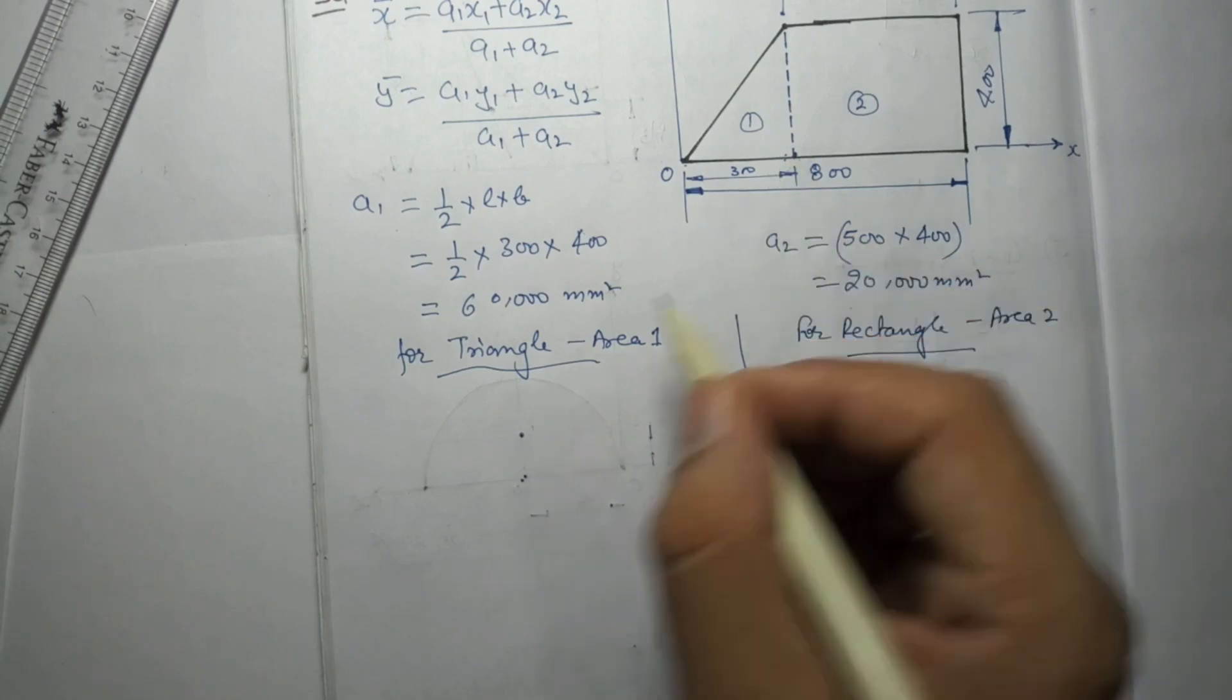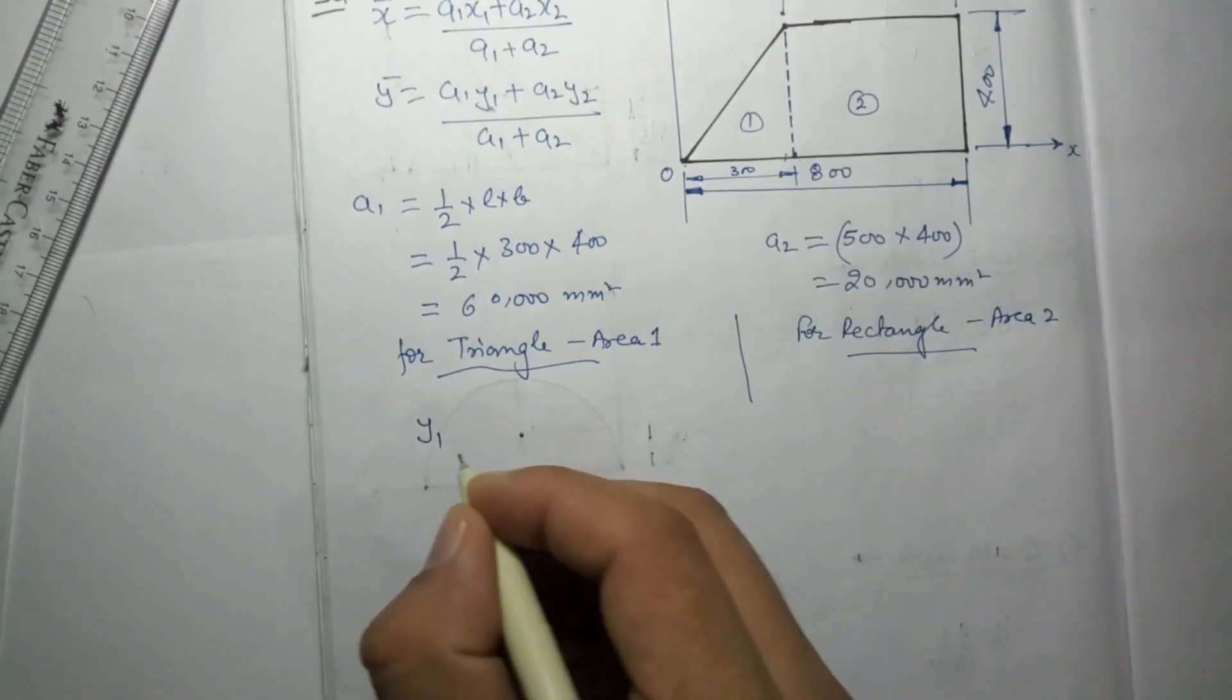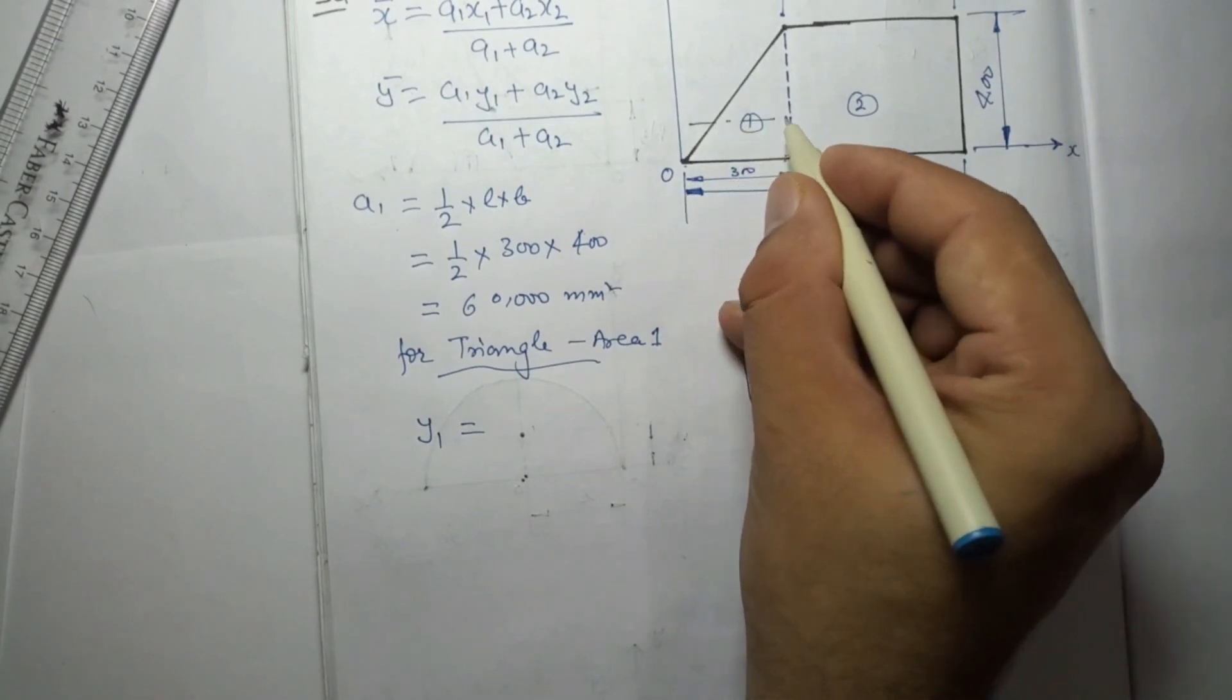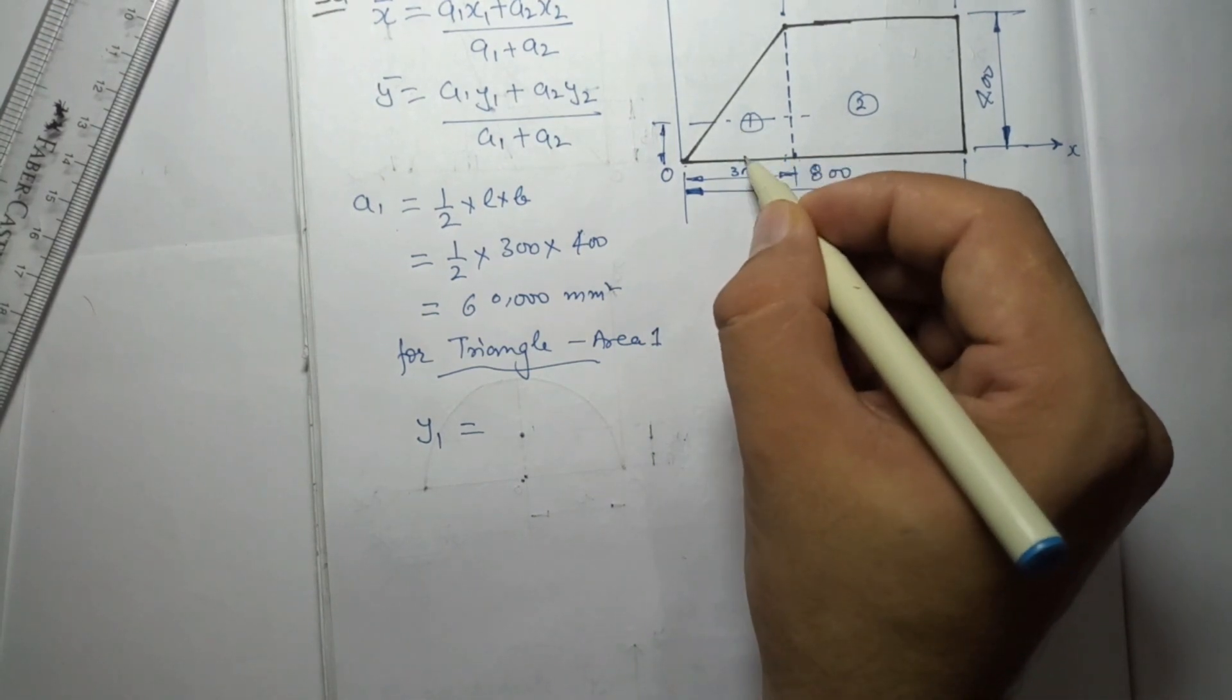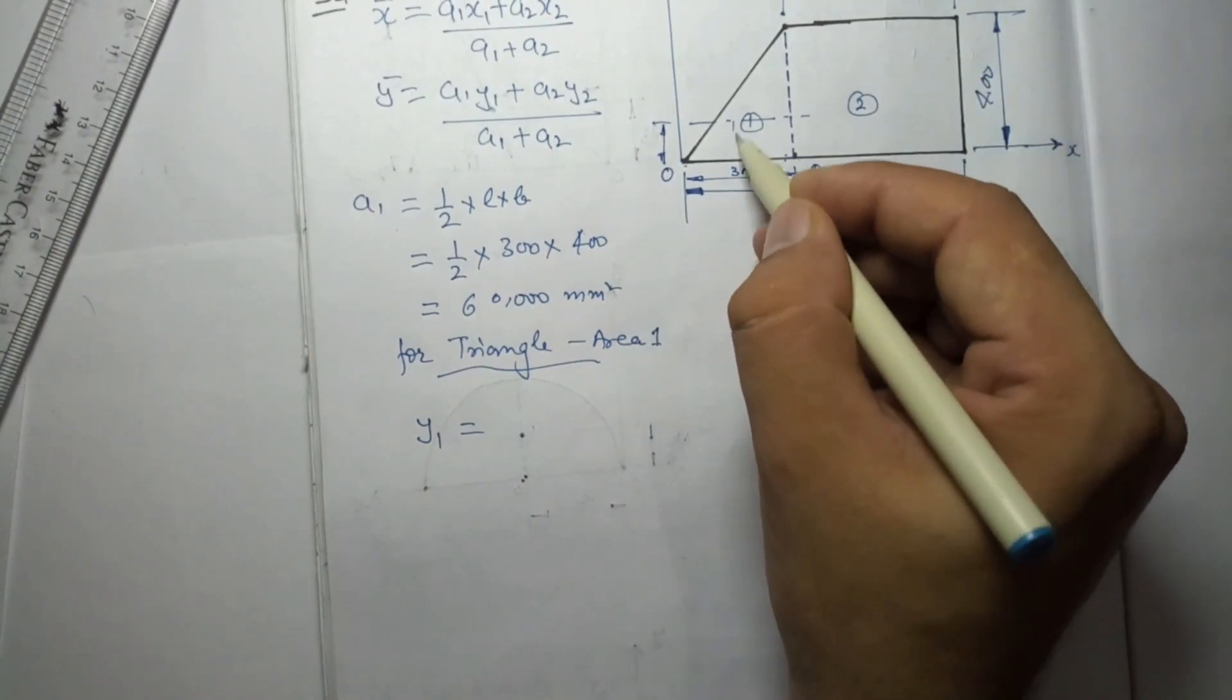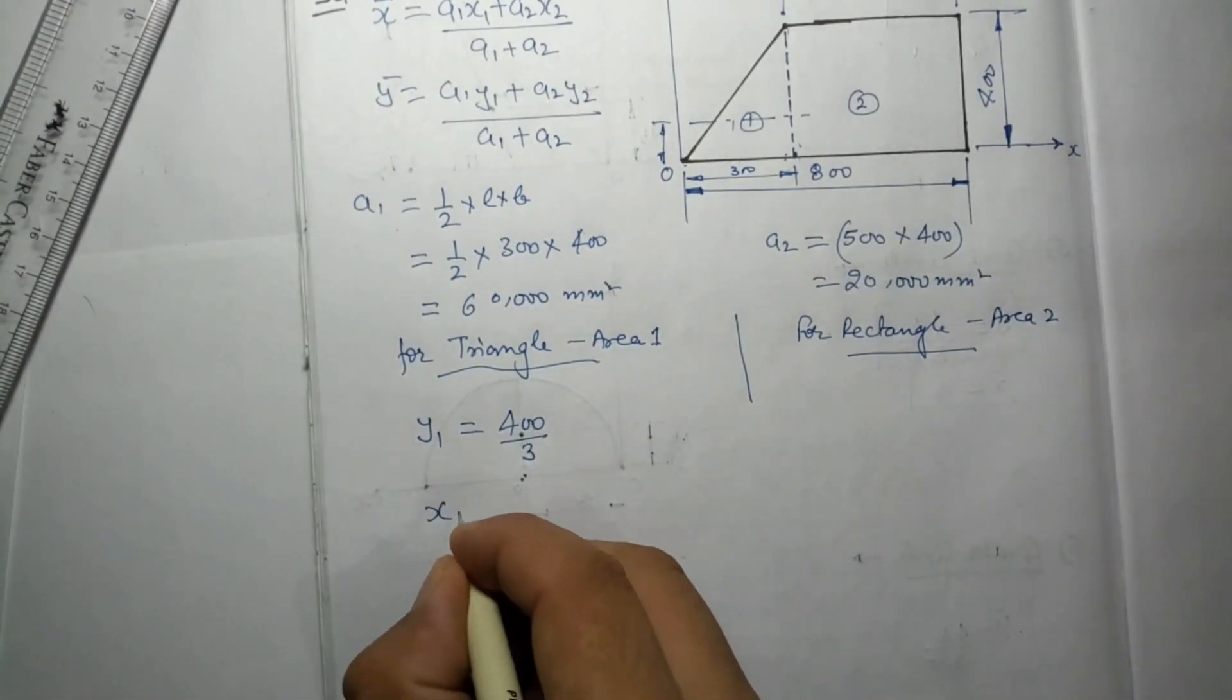For triangle area 1, what will we say? We know the formulas. ȳ, or we can say y1, will be somewhere here. I have to find out this distance. This will be y1, and y1 will be 400 by 3. We know that the formula is h/3, so h is 400, so y1 will be 400/3.